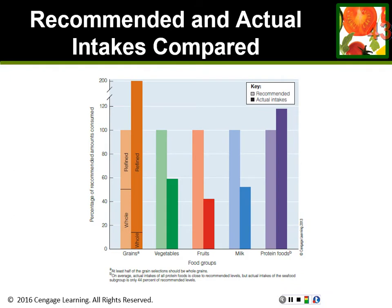This chart shows what's recommended versus what Americans actually eat — the lighter color is recommended, darker is actual intake. We're way below on vegetables, fruits, and milk. We way over-eat protein — we get way more protein than we need. We also get way more grains than we need, but it's not the healthy whole grains; whole grains only show up just a little bit.